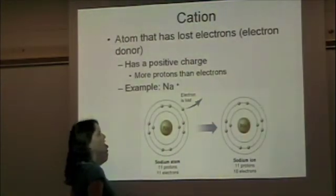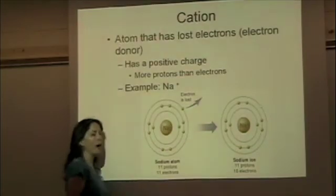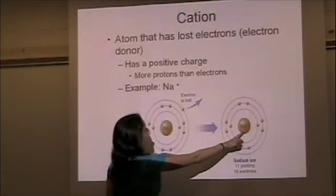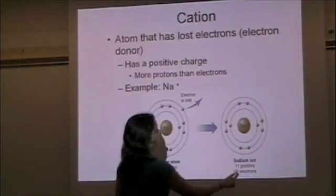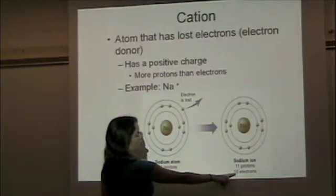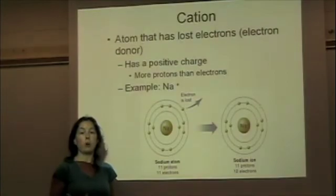This electron can be lost, resulting in a sodium ion which is positively charged. Now we have still 11 protons in the nucleus, but now surrounding the nucleus there are only 10 electrons. There are 11 positives and 10 negatives, which gives overall the sodium ion a plus 1 charge.